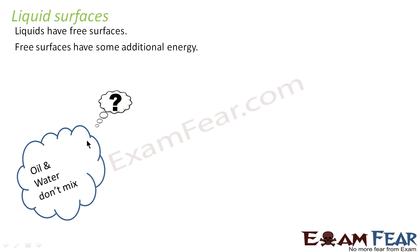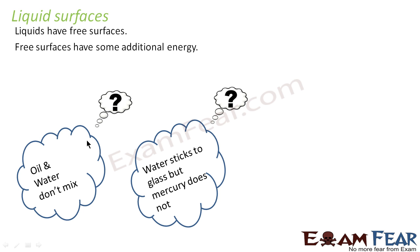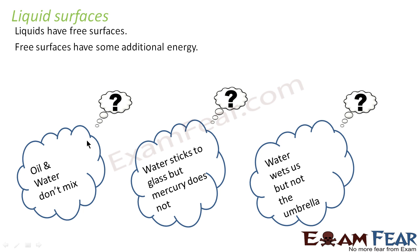Once we study this part of the lesson, you will be able to answer certain interesting questions. Have you ever observed that oil and water do not mix? Even if you try to mix them, oil is seen as droplets inside water. Similarly, you would have observed that water sticks to glass but mercury does not — and because of this property, mercury is used as the fluid inside a thermometer. Also, water wets our body but does not wet an umbrella. What is the property that makes this happen?